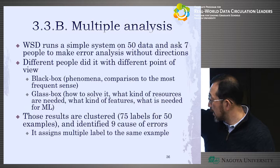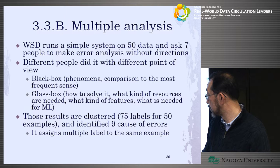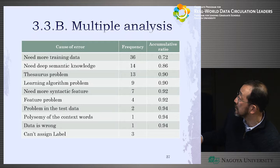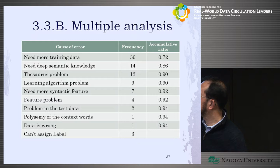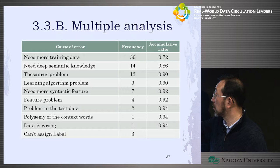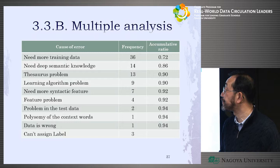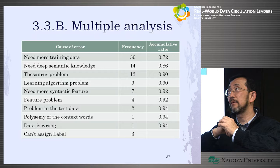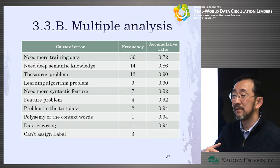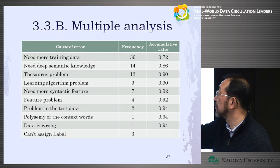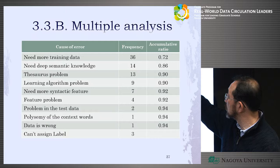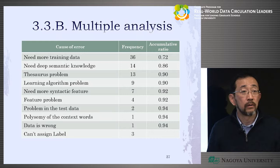After aligning causes to results, they found that most errors need more training data — they believe more data would solve them. Others need deep semantic knowledge, which is one of the crucial problems in NLP right now. Or thesaurus knowledge — hyponym-hyperonym relationships, like 'elephant is animal, animal is creature.' They also identified less frequent causes, giving a clear picture of what the problems are in word sense disambiguation.